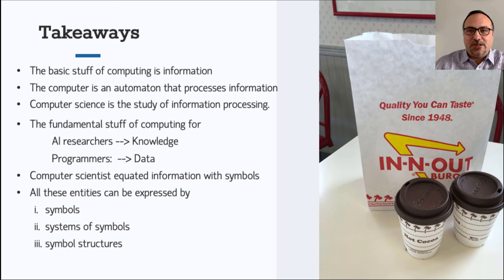Indeed we can. Computer scientists equate information with symbols, but we can go further. As far as computer science is concerned, all these entities can be expressed by symbols, or rather by systems of symbols or symbol structures that stand for or denote other entities. Even the meaningless information of information theory—the bits and bytes—are represented by physical symbols within a computer, such as voltage levels, magnetic states, or on paper, strings of zeros and ones. So we could say that at its core, the stuff of computing is symbol structures.